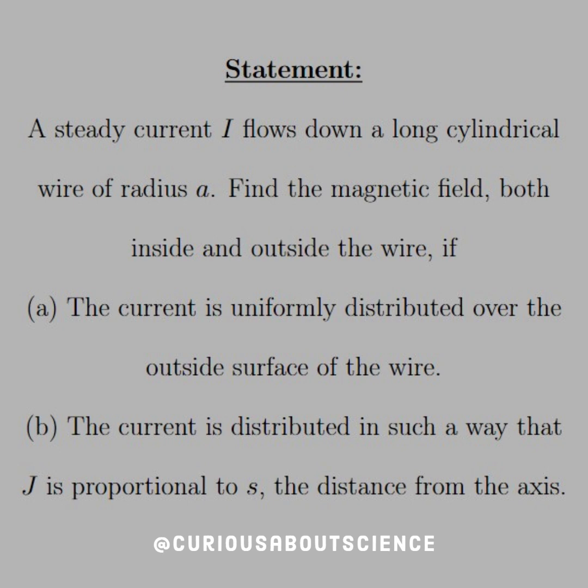The statement reads, a steady current I flows down a long cylindrical wire of radius A. Find a magnetic field, both inside and outside the wire. If A, the current is uniformly distributed over the outside surface of the wire.